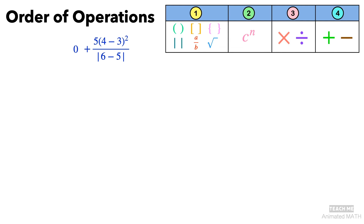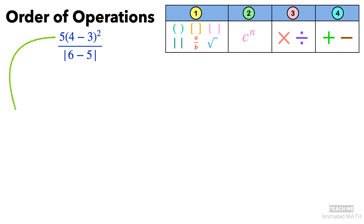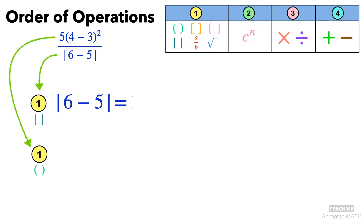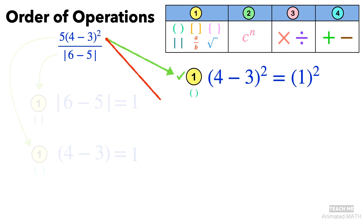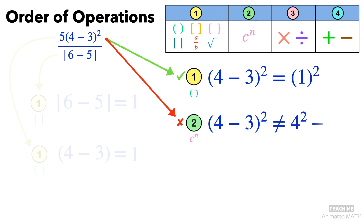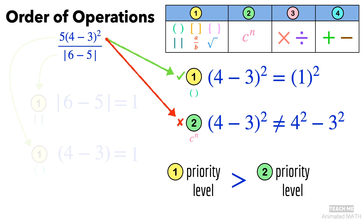When you add 0 to a number, the result is that number. Simplify the expression inside the parentheses and simplify the expression in the absolute value symbol. The absolute value of 6 minus 5 is 1, and 4 minus 3 is equal to 1. Remember, we still need to follow the priority levels for the order of operations. 4 minus 3, all raised to the power of 2, is not the same as 4 raised to 2 minus 3 raised to 2. Simplifying the parentheses has a higher level than evaluating the exponent, so we do that first.